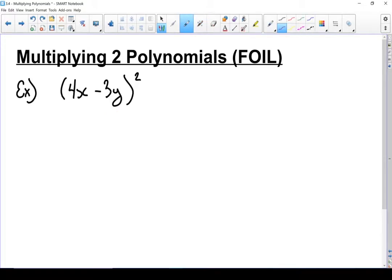You should rewrite this particular question as 4x minus 3y times 4x minus 3y. Let's also go into what FOIL means.